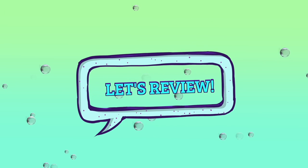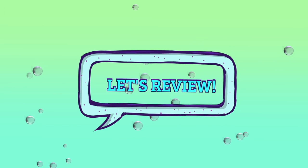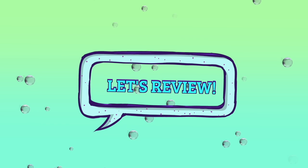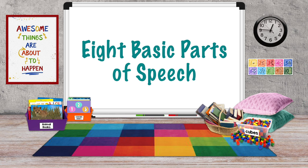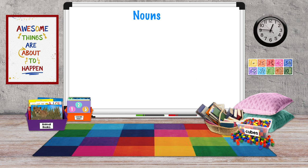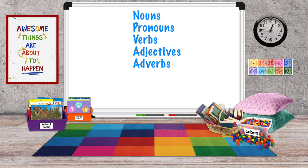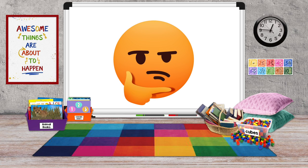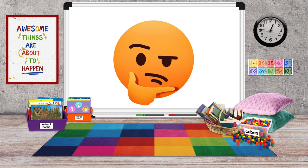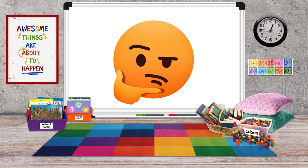Let's review. In the English language, we have eight basic parts of speech: nouns, pronouns, verbs, adjectives, adverbs, prepositions, conjunctions, and interjections. Take a look at something you read and see if you can find all eight parts of speech.